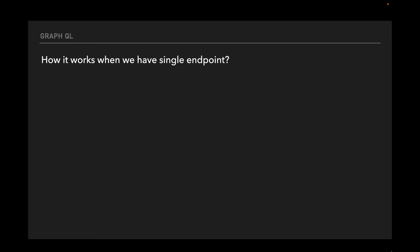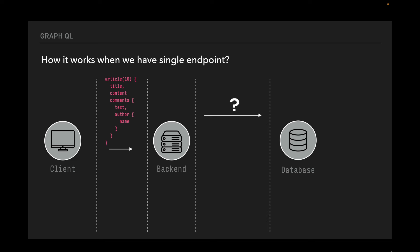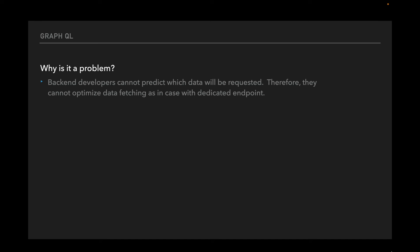Now let's look at how it works with GraphQL. For example, the client requests an article by ID with many fields and comments; next time, only comments; and finally, only a user. All these requests go through the single endpoint. Backend developers cannot, for the first case, do a single request to the database because requests like the second or third are also possible. They cannot predict which data will be requested and therefore cannot optimize data fetching as with dedicated endpoints. In REST, this would be represented by three different endpoints: GetArticle, GetComment, and GetUser. Flexibility on the client side leads to insufficient data fetching on the backend side.